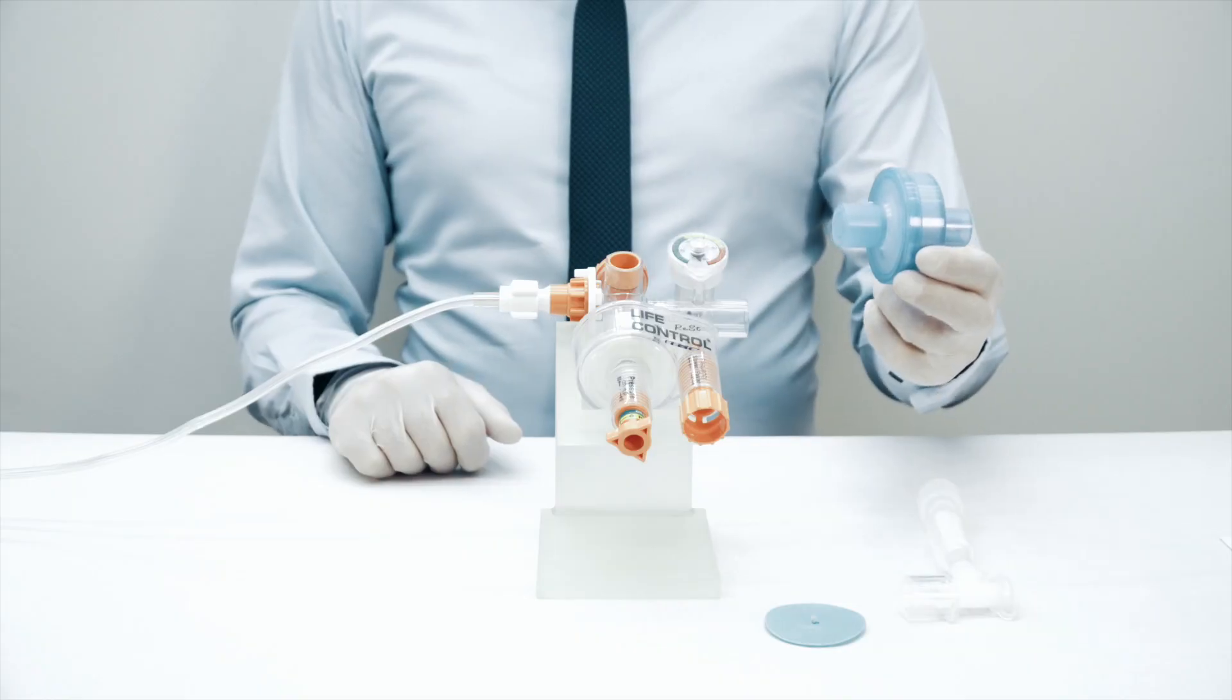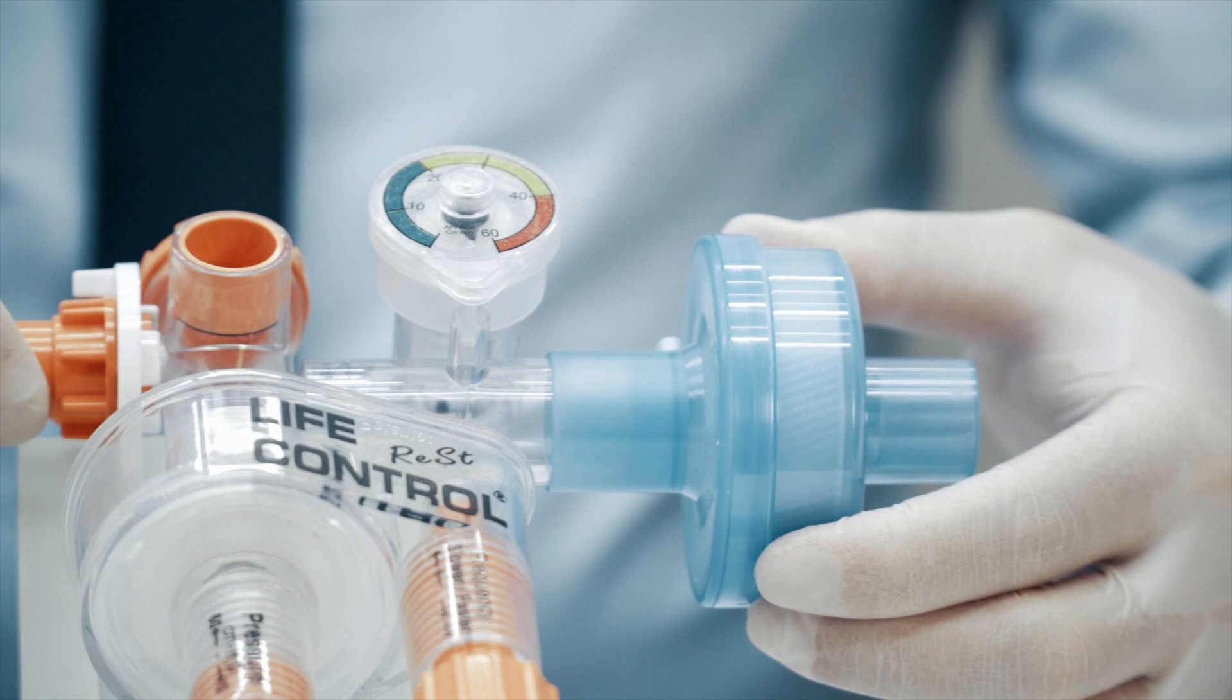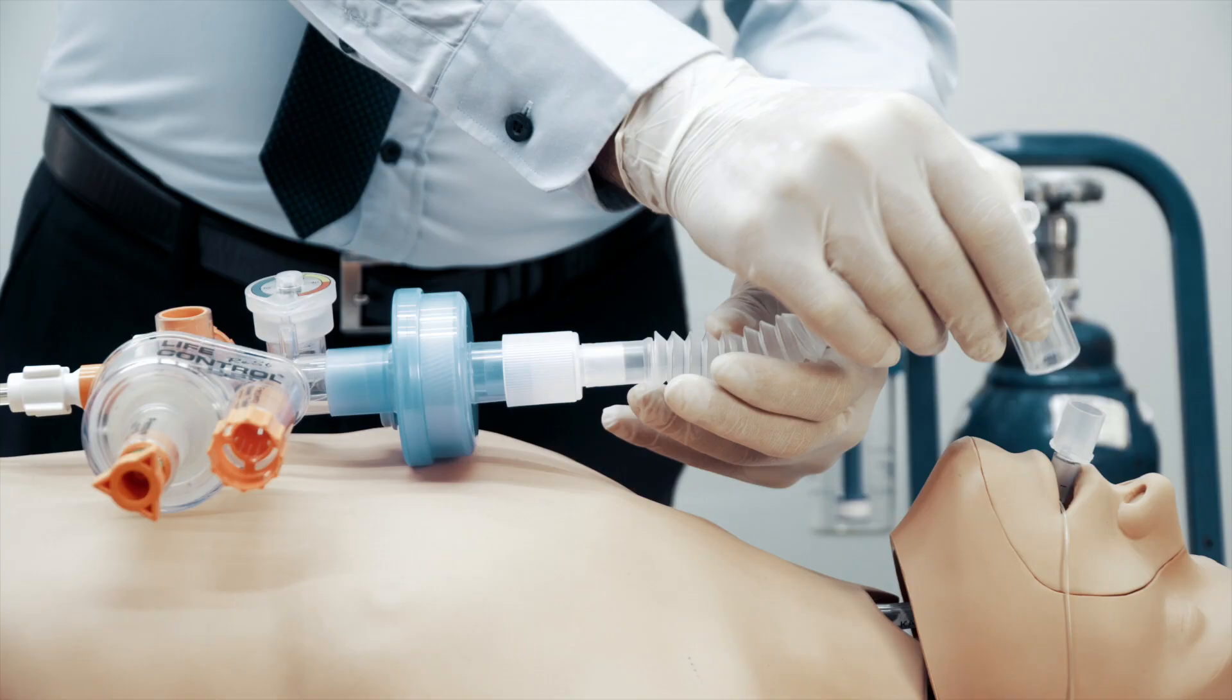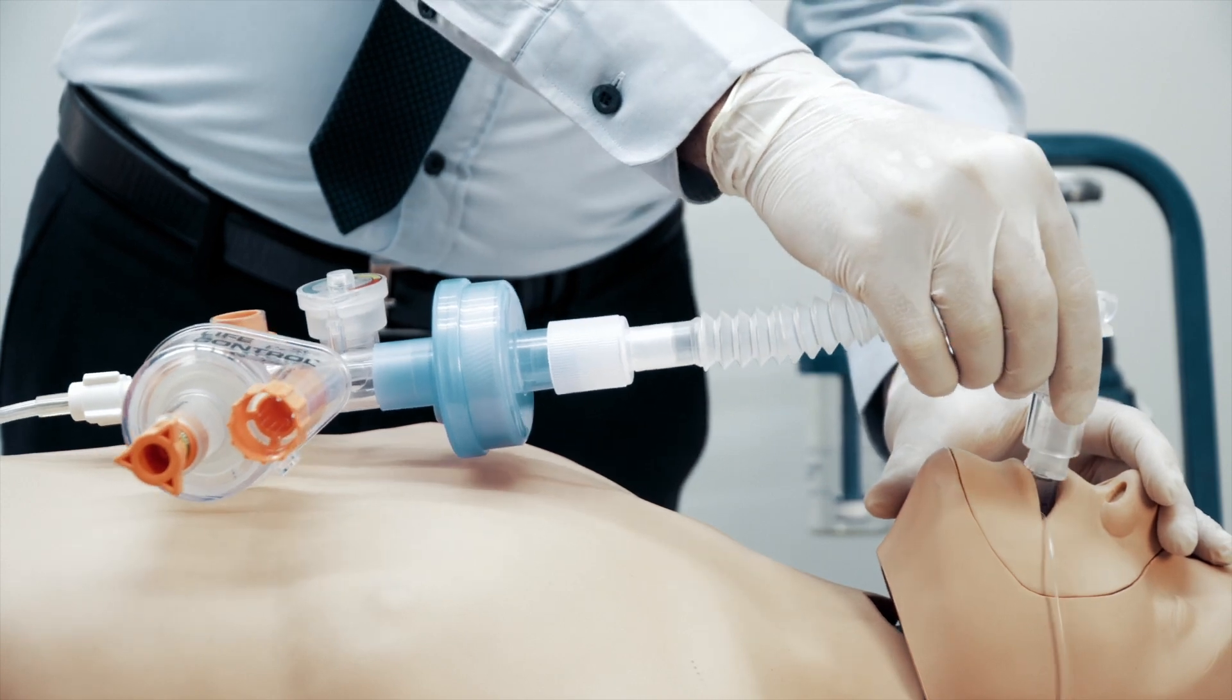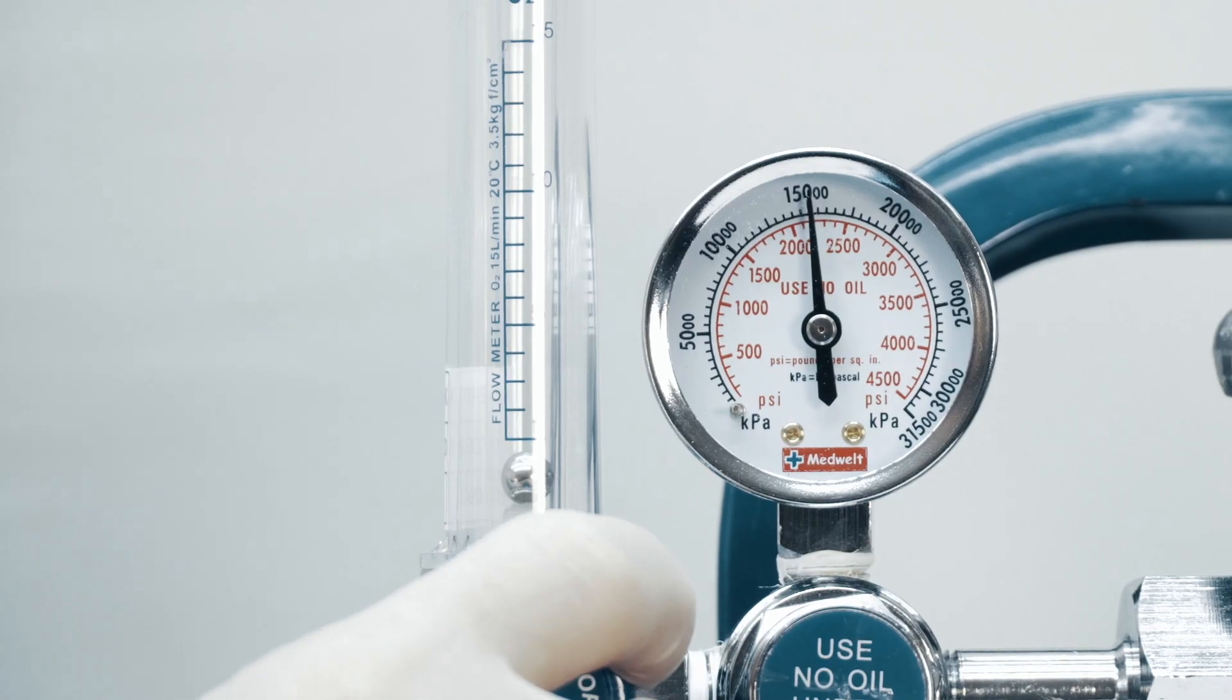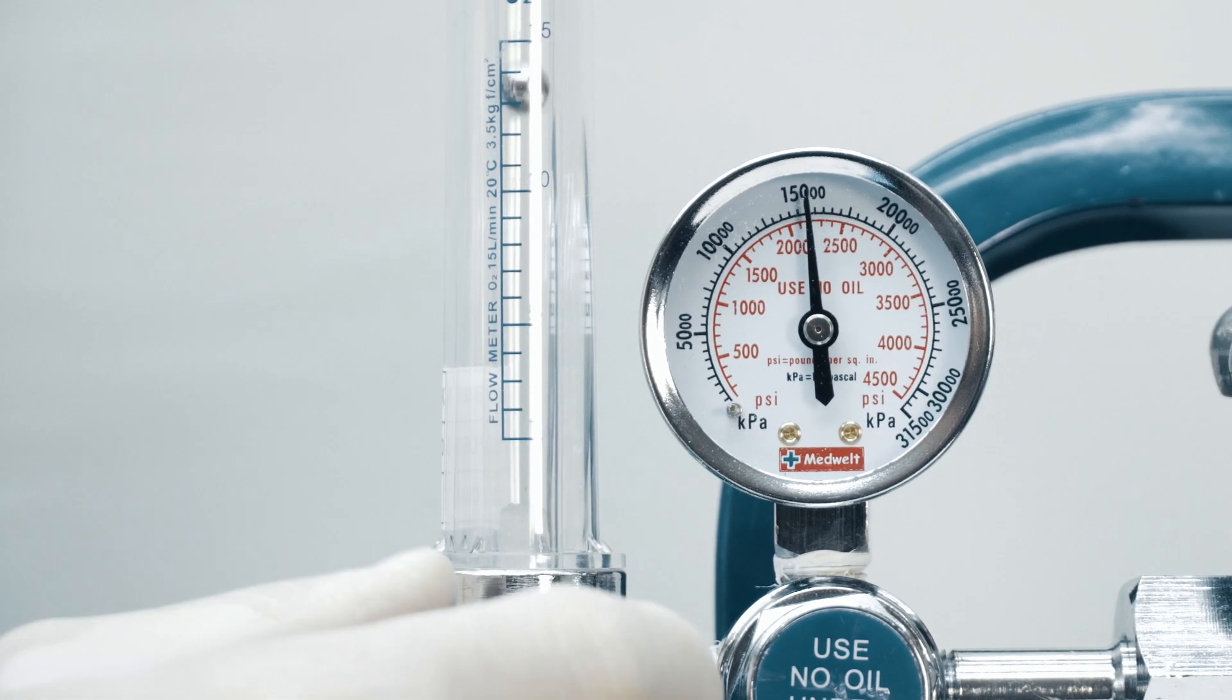Connect antibacterial HME filter and patient connector tubing. Connect the patient connector tubing to a mask or ET tube. The device can operate in a flow range of 8 to 40 liters per minute.